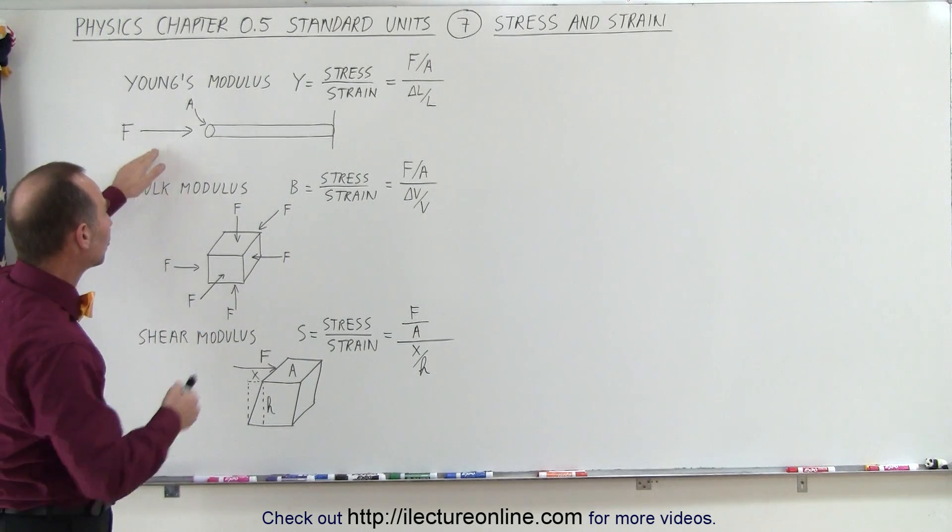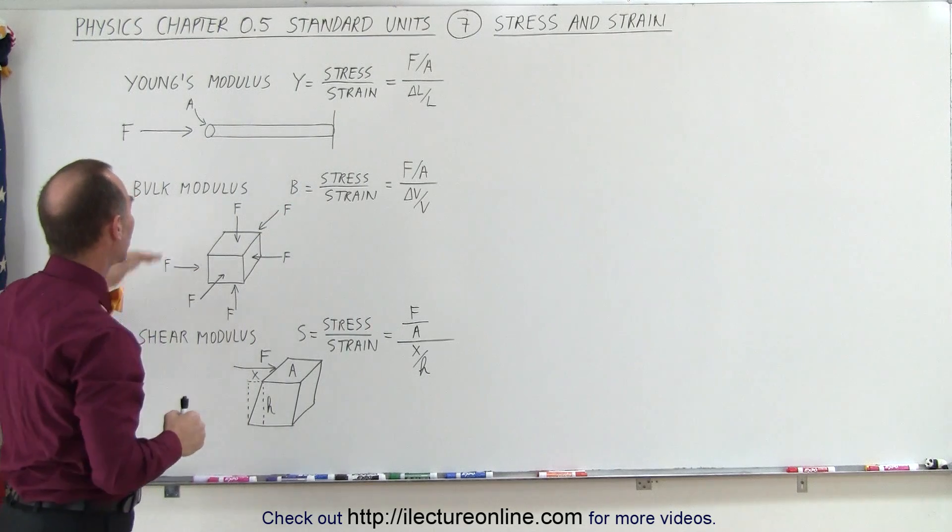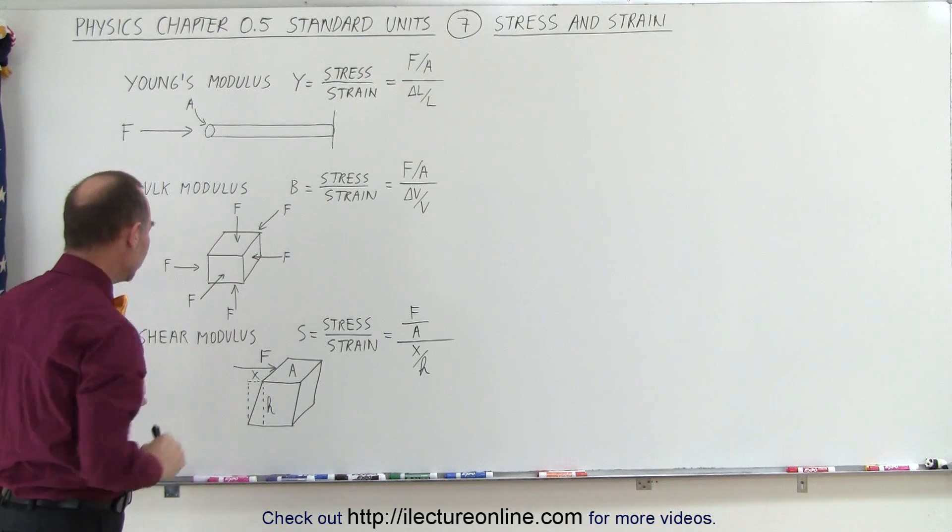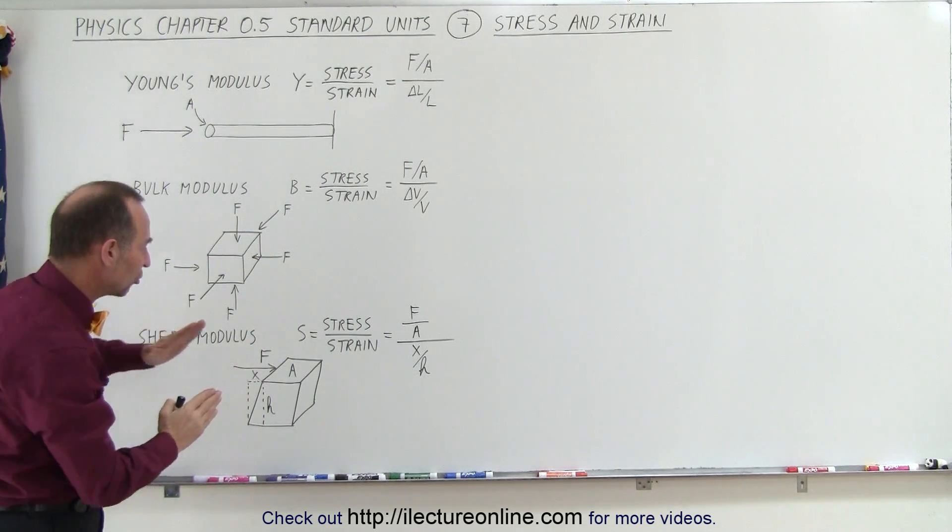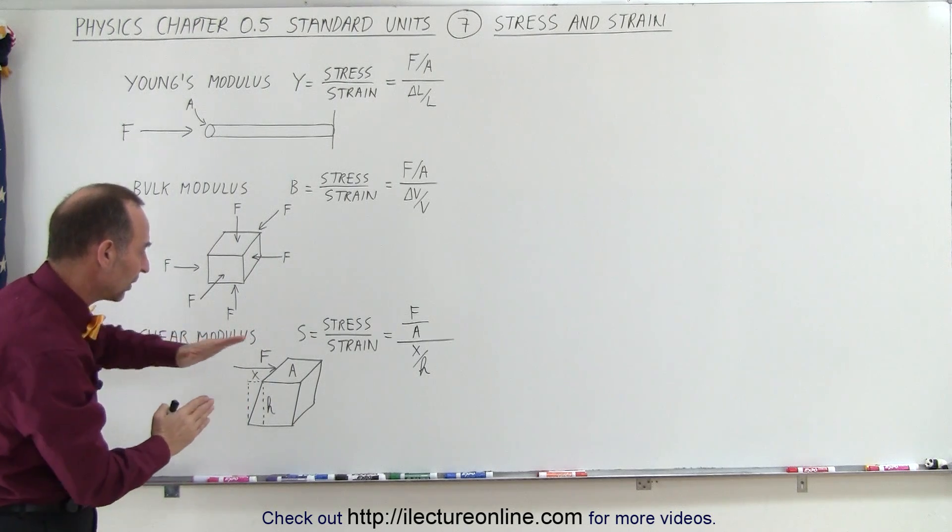In the case of Young's modulus, it's usually a linear object. Bulk modulus is volume, and shear modulus is when you try to shear something, where you push something on the side.